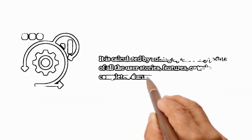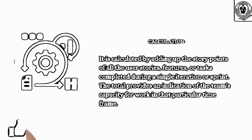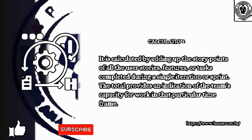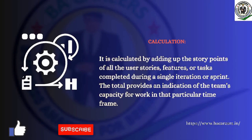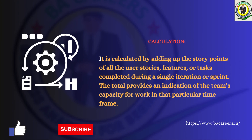Calculation: Velocity is calculated by adding up the story points of all the user stories, features, or tasks completed during a single iteration or sprint. The total provides an indication of the team's capacity for work in that particular time frame.